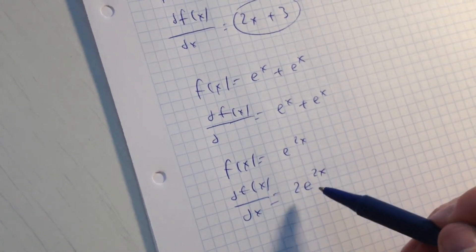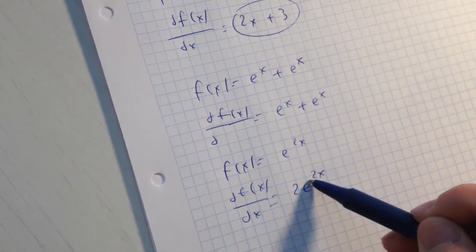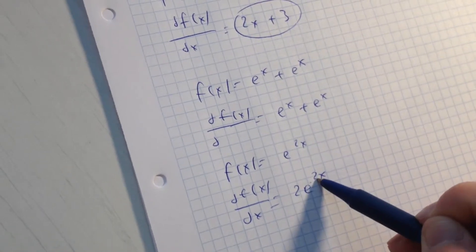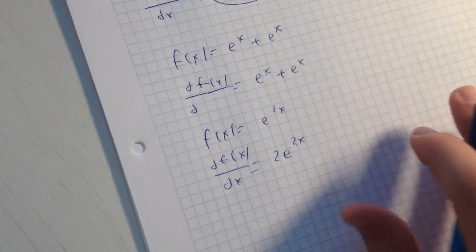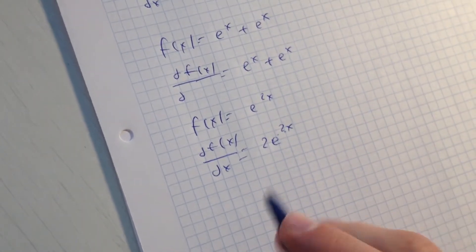if we have 4, we have to put here 4, and here it's still 4e in the power of 4x. What else can I show you? For example, we have